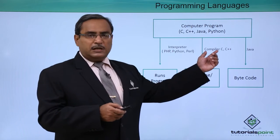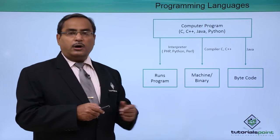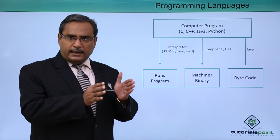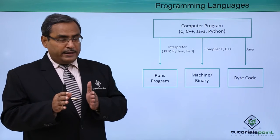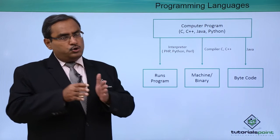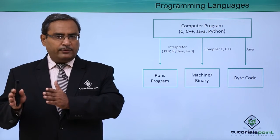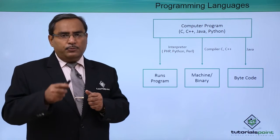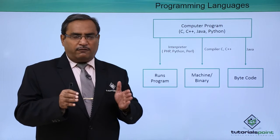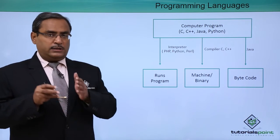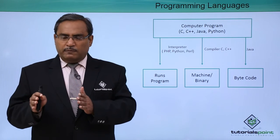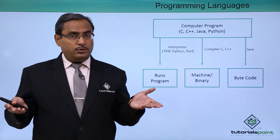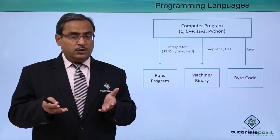For C and C++, we have compilers, which produce machine or binary code as output. The main program written in C or C++ is translated by the compiler into a separate file in binary or machine-level language, and that compiled version of the program gets executed. In the system where the program executes, we do not require the coexistence of the source code along with the compiler, because the executable version of the program is self-sufficient and can run without the source code or compiler software.